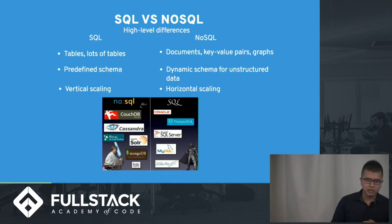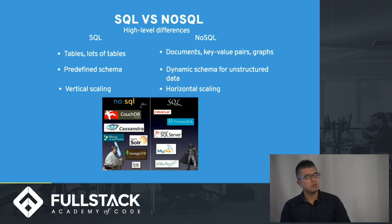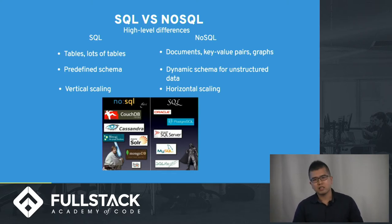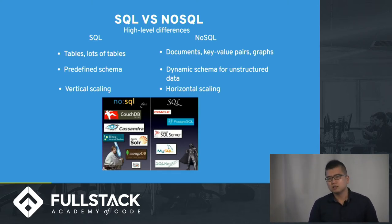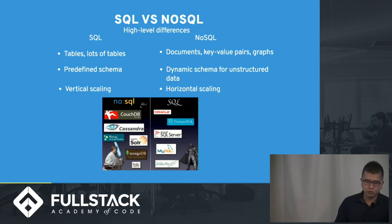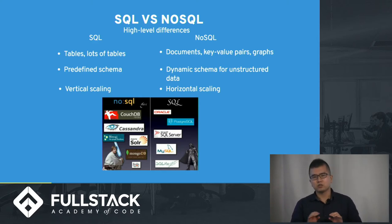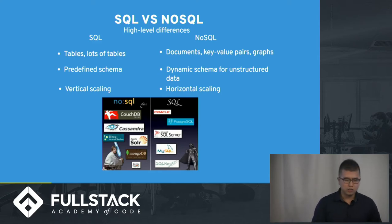Another thing is how they scale. For SQL, you scale vertically — that means you make a single server bigger and more powerful in order to handle the load. For NoSQL, you do horizontal scaling, which means you divide the workload across smaller servers, so more servers are doing the same work.